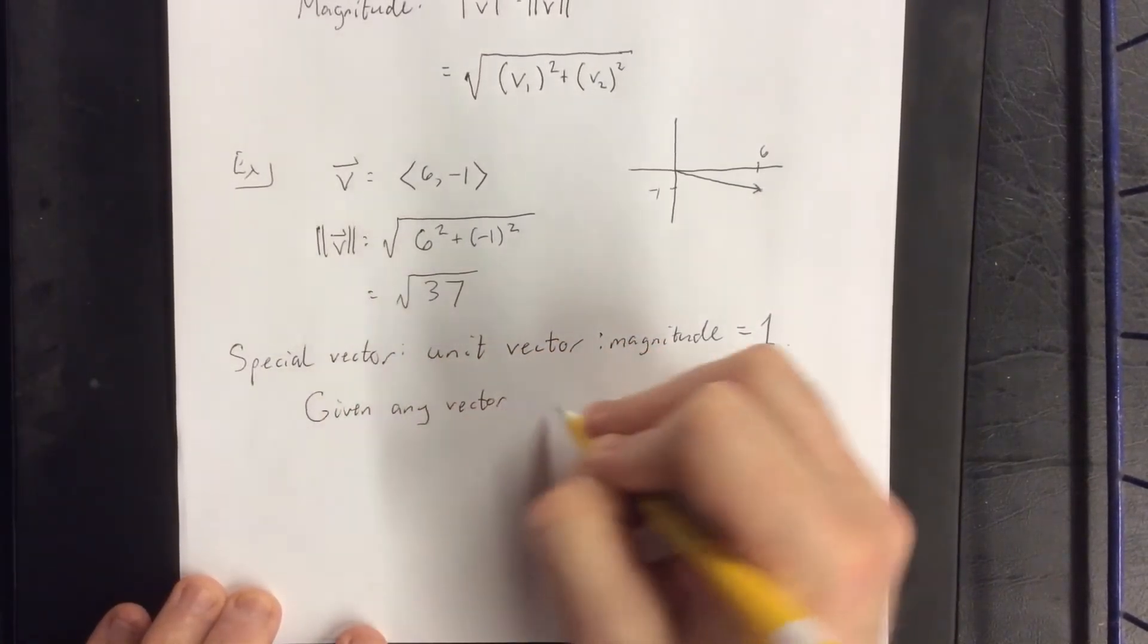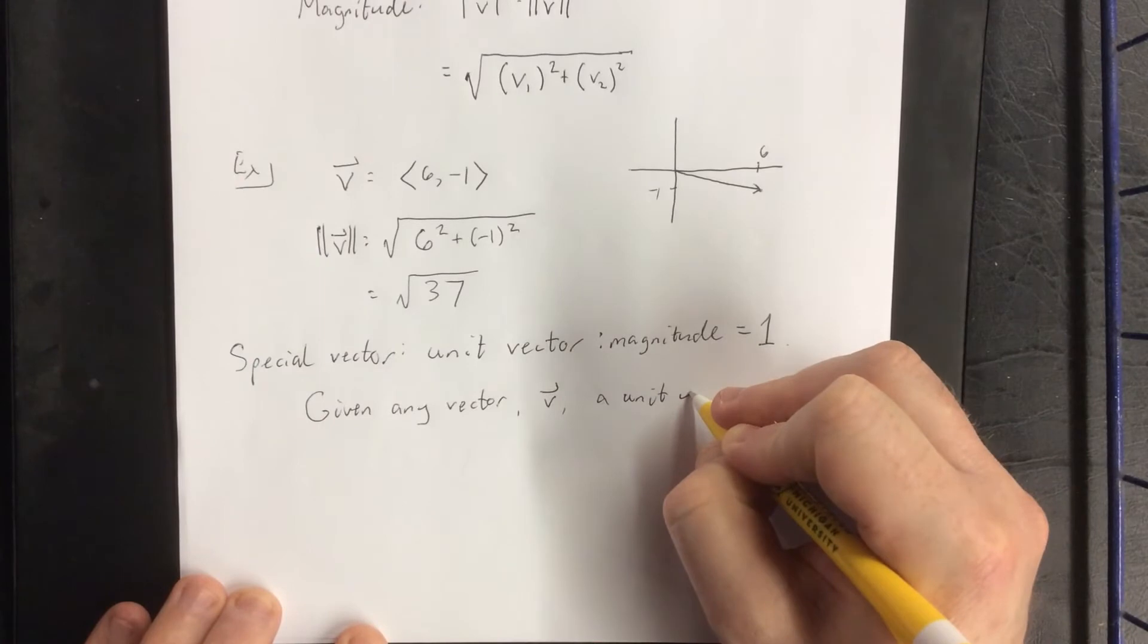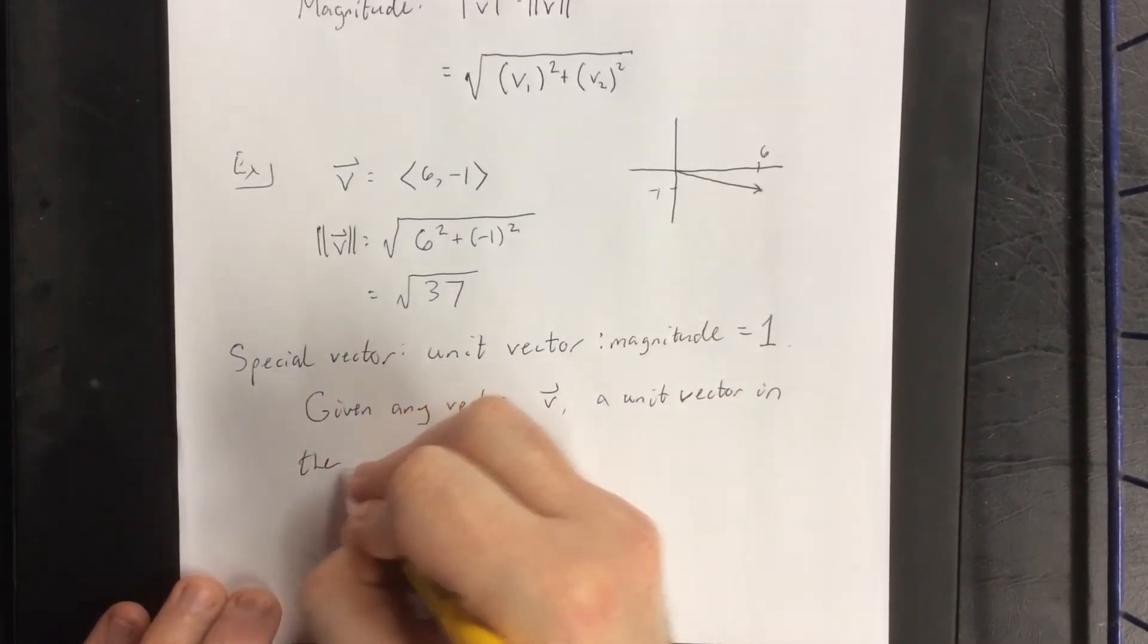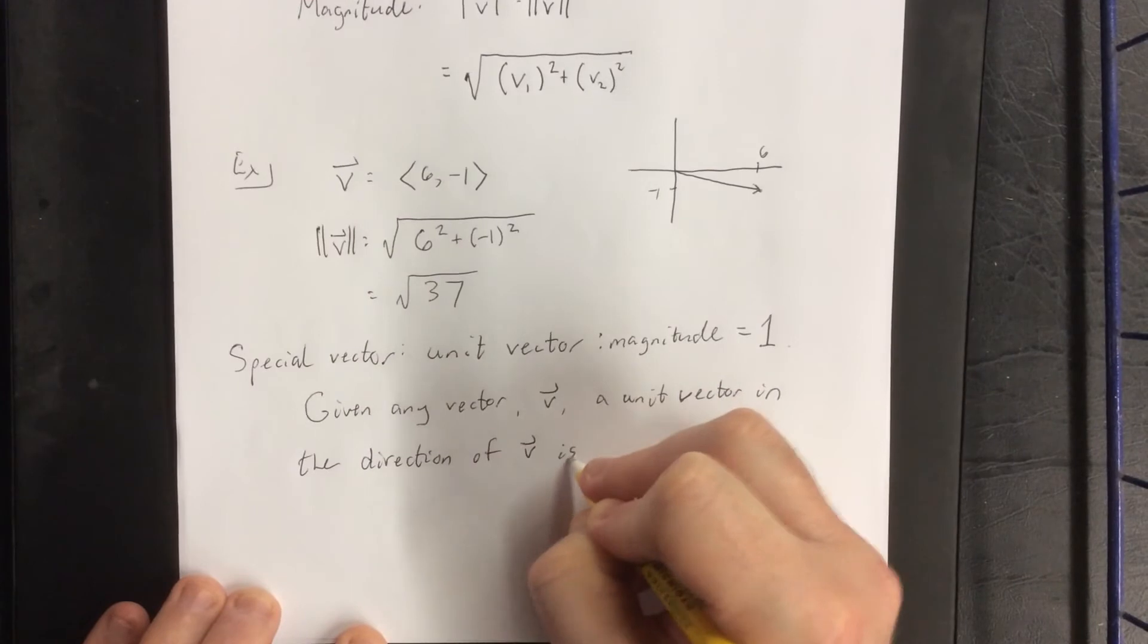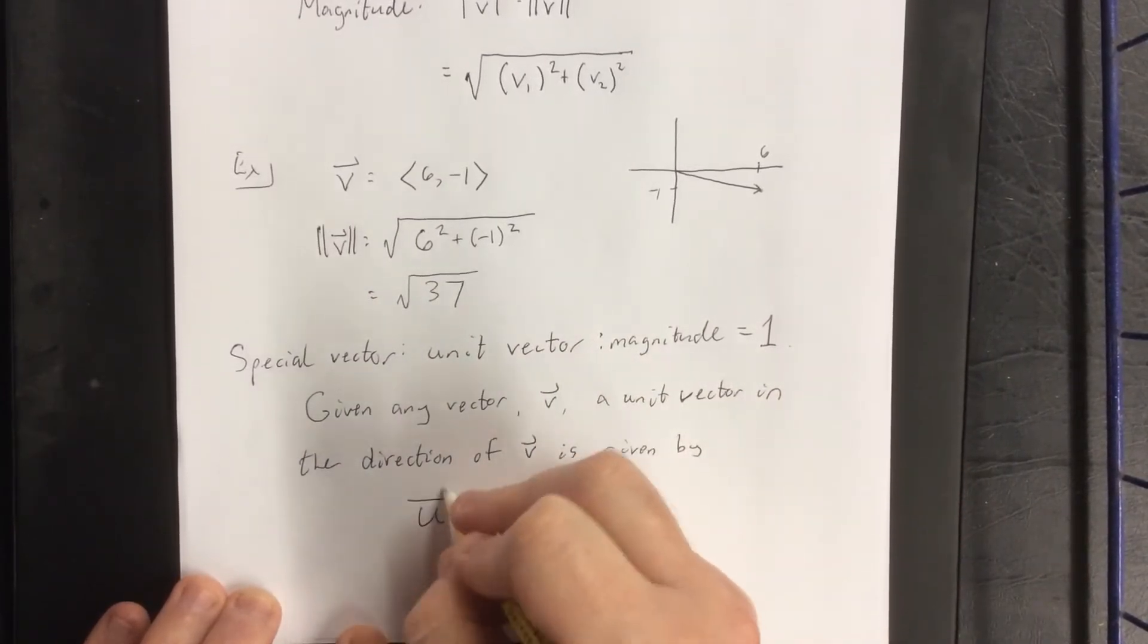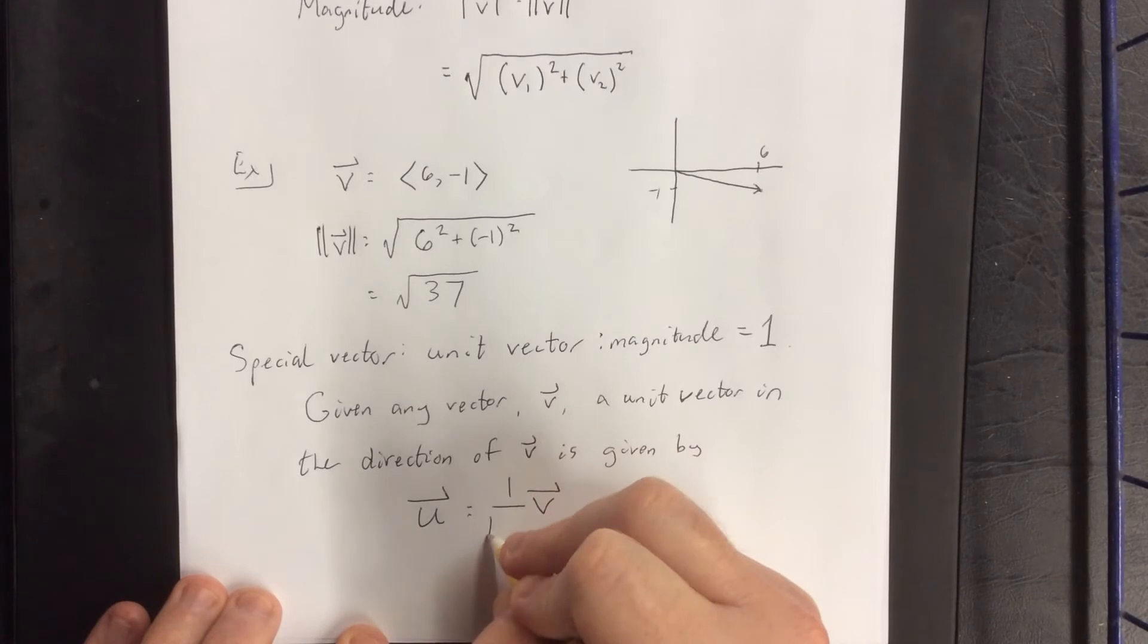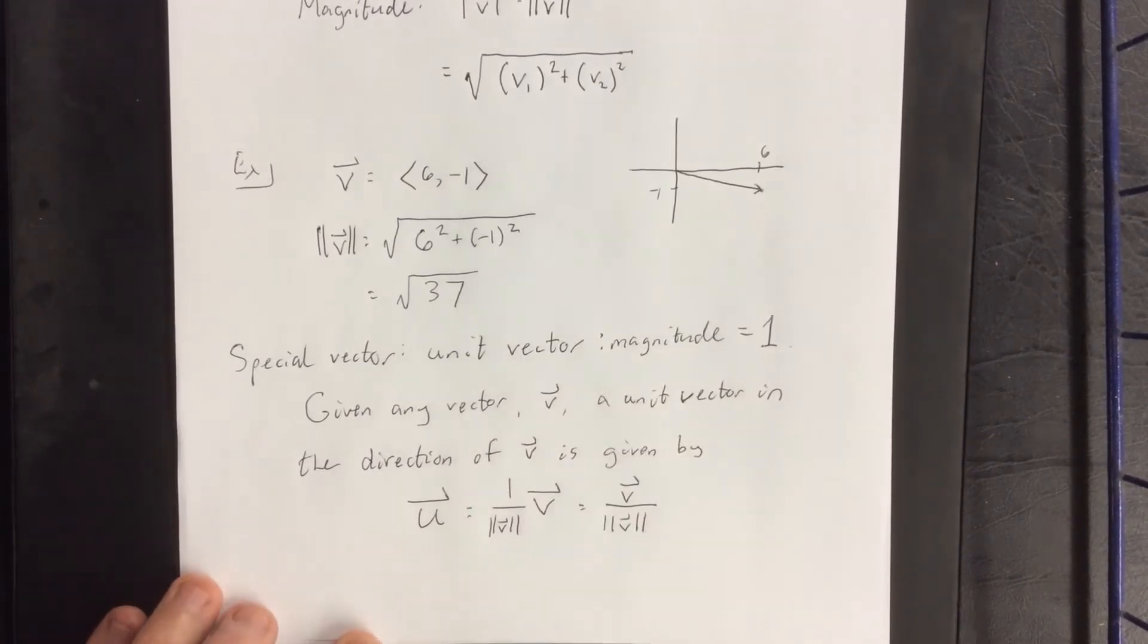Given any vector v, a unit vector in the direction of v is given by u, where we take vector v and multiply by the reciprocal of the magnitude of v. You could also say: take vector v and divide by its magnitude. You're guaranteed to get a unit vector.